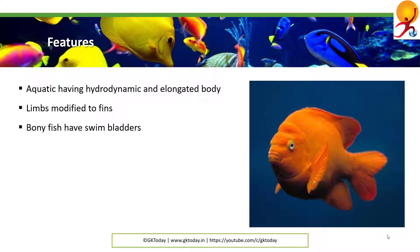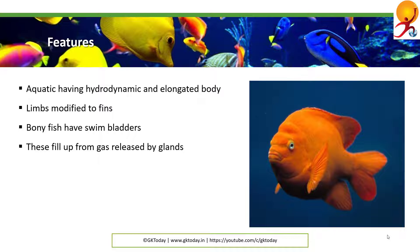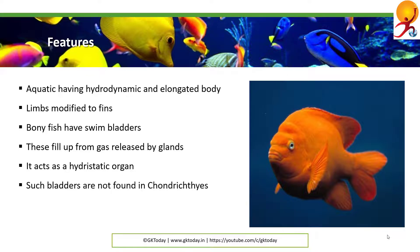The swim bladder works as a hydrostatic organ since it produces variation in relative density of the body, thus regulating the buoyancy and the depth of the fish in water. Such swim bladders are not found in cartilaginous fishes. Due to this, they must continuously move their body to keep swimming and to maintain their depth in water. This is the reason that sharks need to move their body to swim while bony fishes do not. When the swim bladder is filled with gas, it reduces the density of the body of the fish, and when it is empty, the density increases. As a result, this mechanism controls the depth of fish underwater.